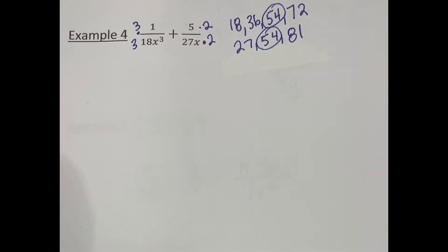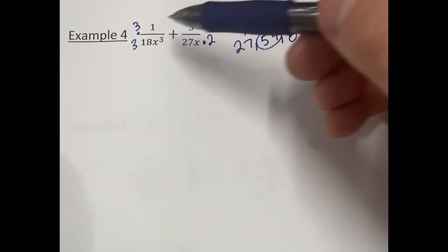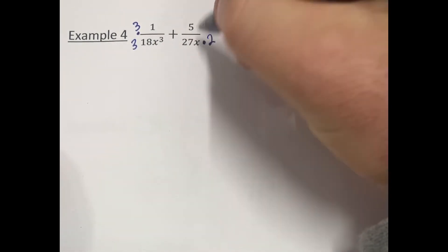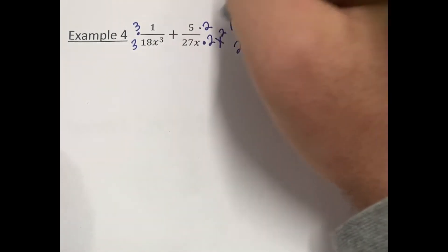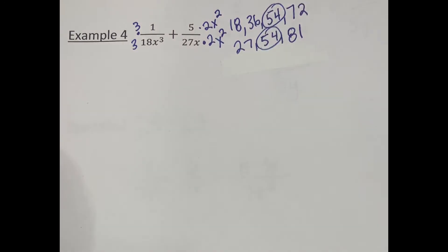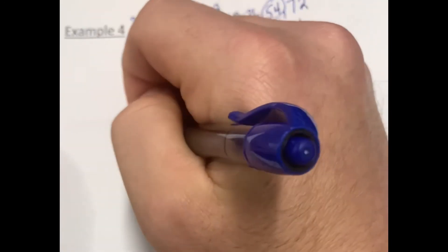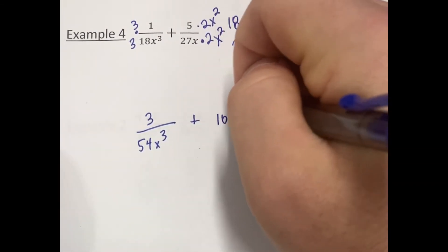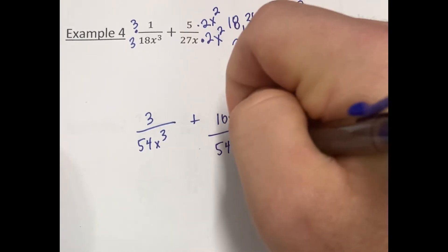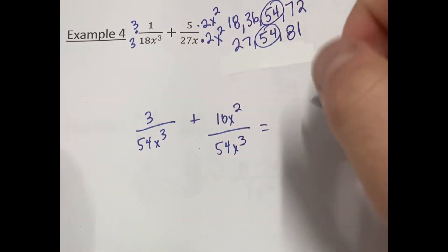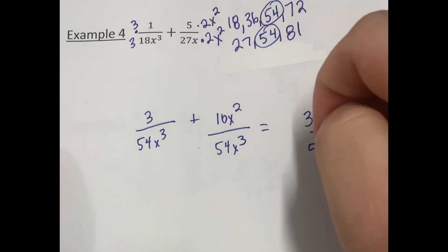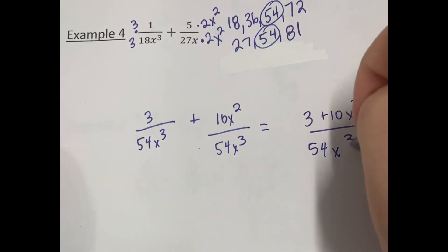Now we also look at the variables. We have x cubed over here and x over here — we need to make those the same. We have 3 x's compared to 1 x, so we need two more x's; we multiply by x squared on that side. So we get 3 over 54x cubed plus 5 times 2x squared is 10x squared over 54x cubed. Adding those together we get 3 plus 10x squared over 54x cubed.